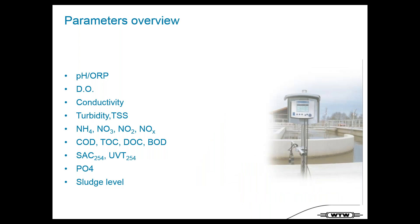We have a long list of parameters we can measure with IcoSensorNet: pH, ORP, dissolved oxygen (DO), conductivity, turbidity, suspended solids, nitrogen parameters like ammonium, nitrate, and NOx, carbon parameters like COD, TOC, DOC, and BOD, single wavelength absorption SAC at 254 nanometers, UVT (spectral absorption or UV transmission), phosphate, and sludge level.